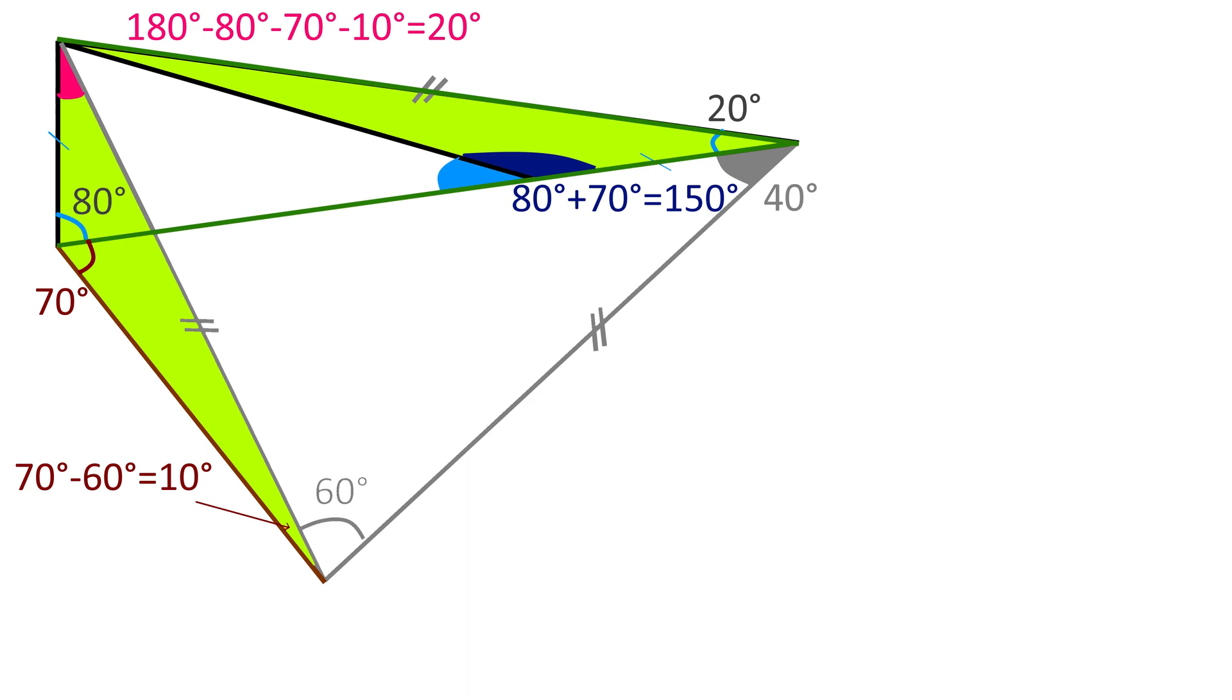The dark blue angle here is 80 plus 70 degrees equals 150 degrees. The light blue angle is therefore 180 minus 150, giving 30 degrees.